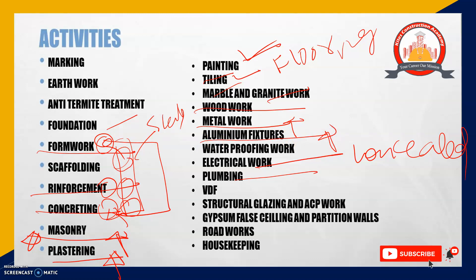Next comes aluminum fixtures, used in place of wooden windows. This activity is done after the painting activity. Then comes waterproofing work, which is done before the tiling work. The main purpose of waterproofing is to avoid the percolation of water into the slab, making it watertight. Balconies, utilities, open terraces, and toilets above ground floor see a lot of water activity, especially during rainy season, so waterproofing prevents dampness and leakages.